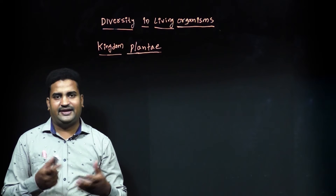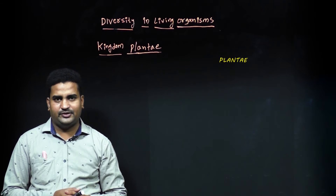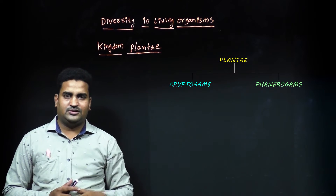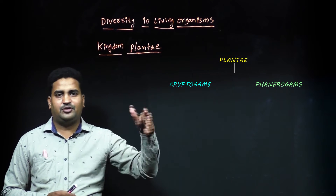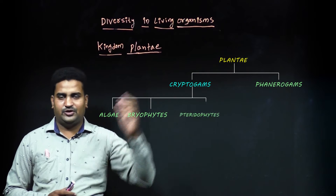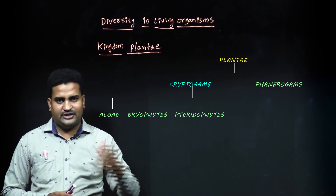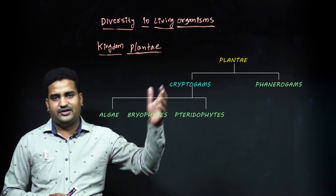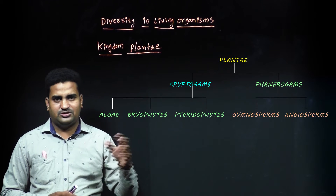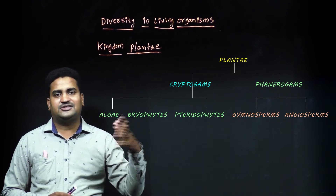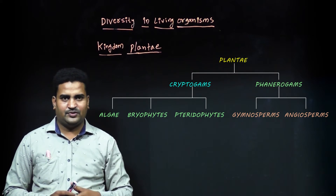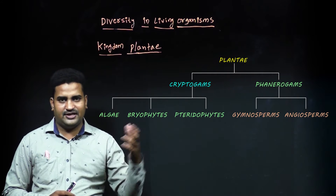Kingdom Plantae is further divided based on different criteria into cryptogames and phanerogames. Cryptogames do not produce seeds and are further classified into algae, bryophytes, and pteridophytes. Phanerogames bear seeds and are further divided into gymnosperms and angiosperms. Gymnosperms bear naked seeds, meaning the seed is not covered by a fruit.